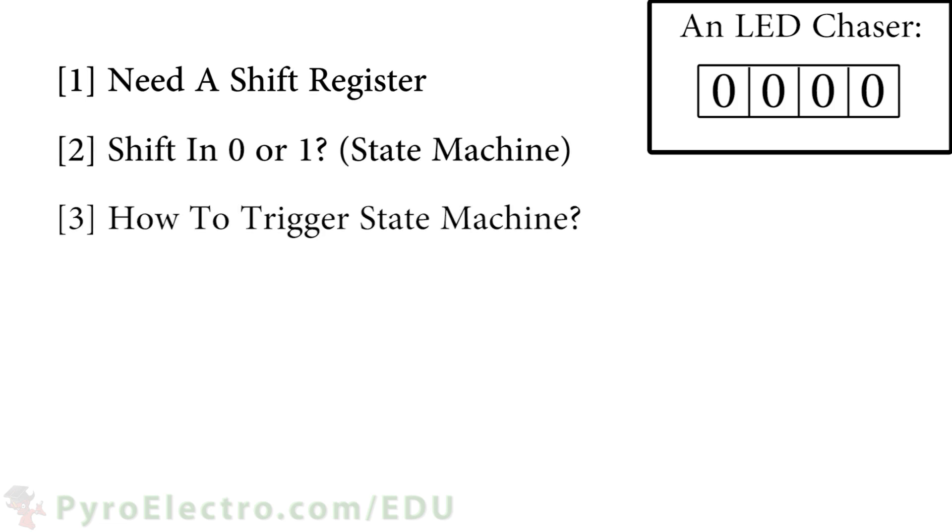Three, we need a way to trigger that state machine between the two logic zero and logic one inputs. Four, we need a system clock to drive the logic circuit at a certain frequency. As before, we used the 555 timer, so we'll use it again.